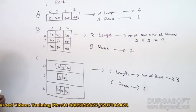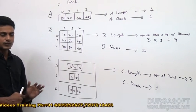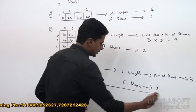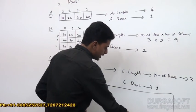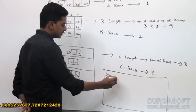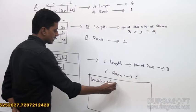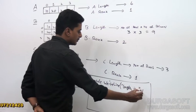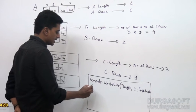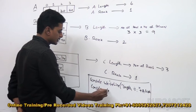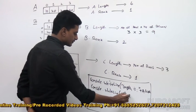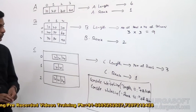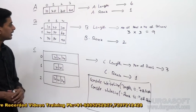If you want to find out the length and rank properties of any array, we add two statements. We write: console.WriteLine("Length is " + a.Length), and console.WriteLine("Rank is " + a.Rank). These two simple statements allow you to find the length and rank of any array.